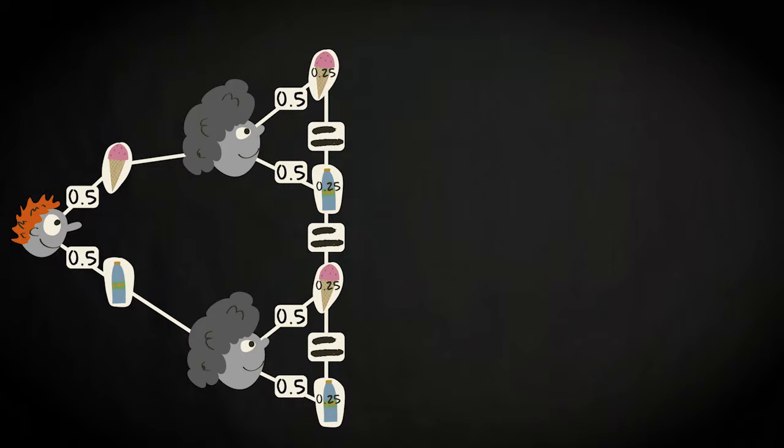It makes sense if you consider the sequential nature of these events and the fact that each branch is independent of another. By going along one branch after the first customer you have halved your probability for that particular outcome.